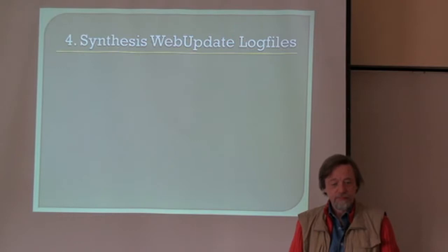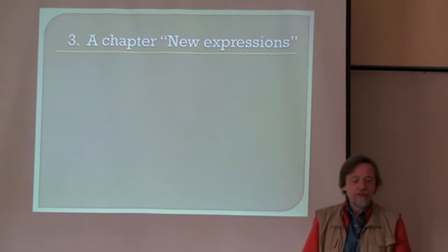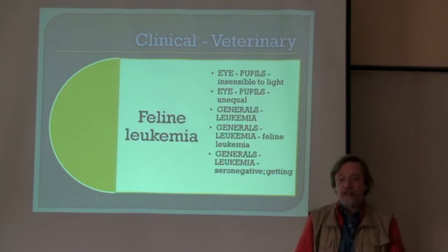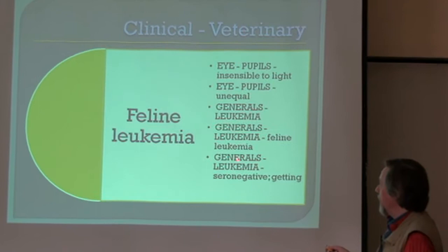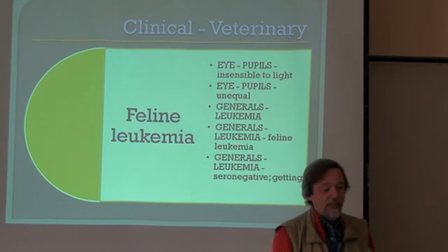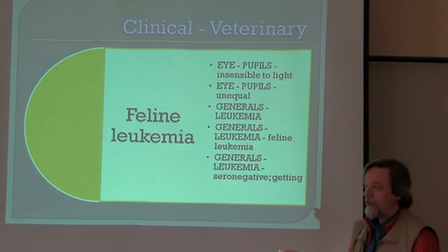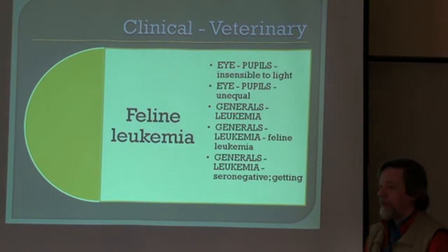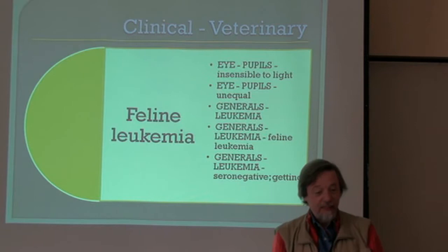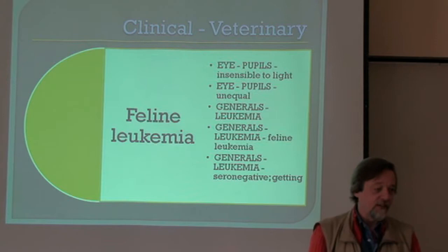The veterinary clinical chapter uses the example of feline leukemia — leukemia in a cat, a specific type of leukemia. There is already a rubric in Generals for leukemia with an existing sub-rubric. But what makes this rubric more interesting is that our veterinary colleagues told us that in these situations there are symptoms in the eyes — unequal pupils, insensible to light — which are typically present in feline leukemia. We grouped those remedies together, creating a very interesting clinical rubric with the remedies that may apply for your cat.